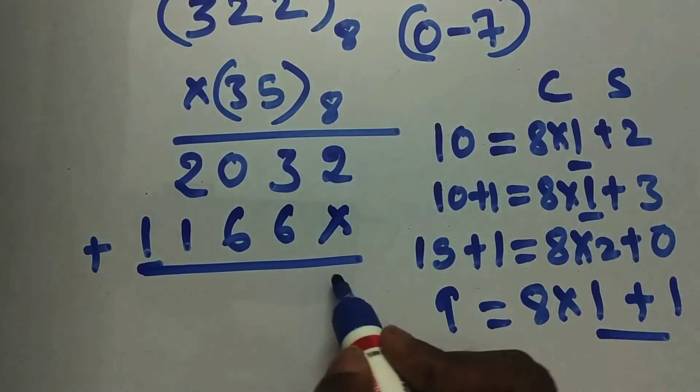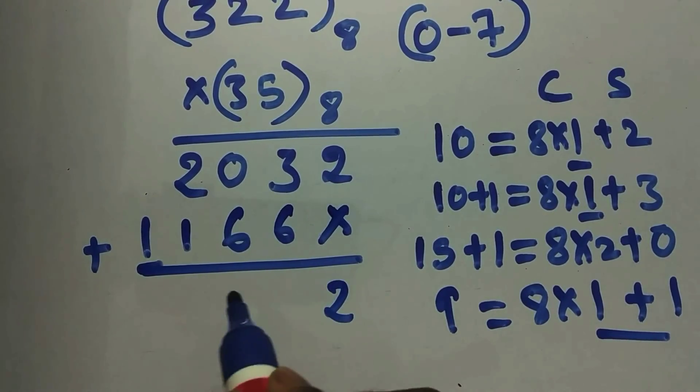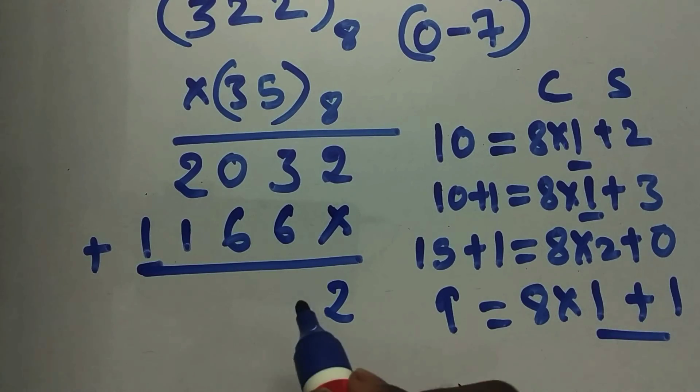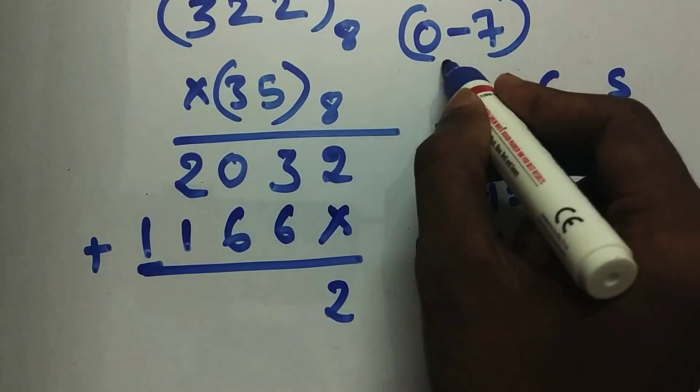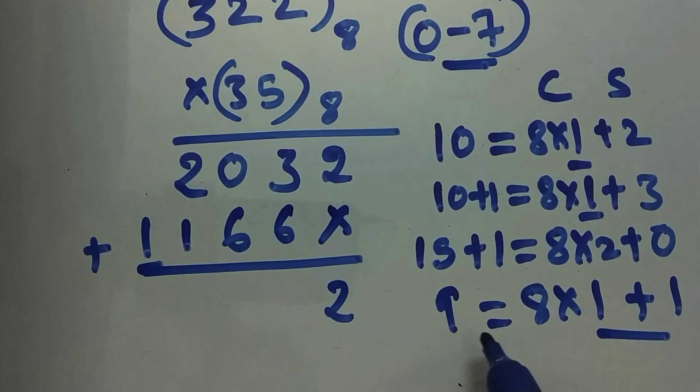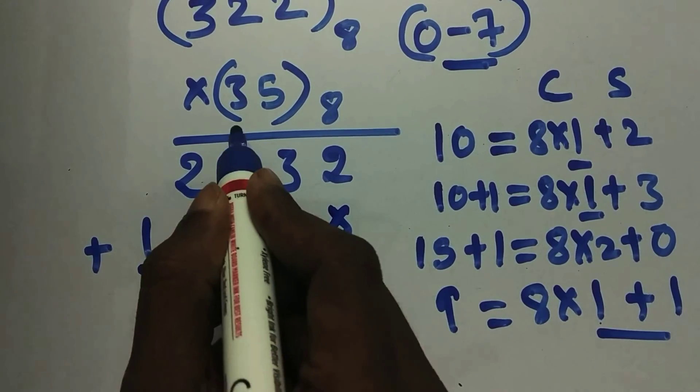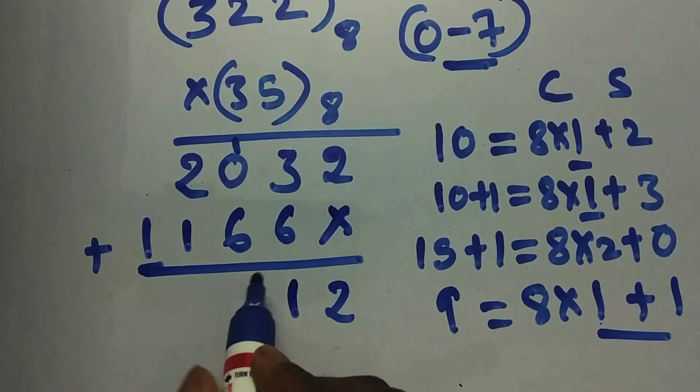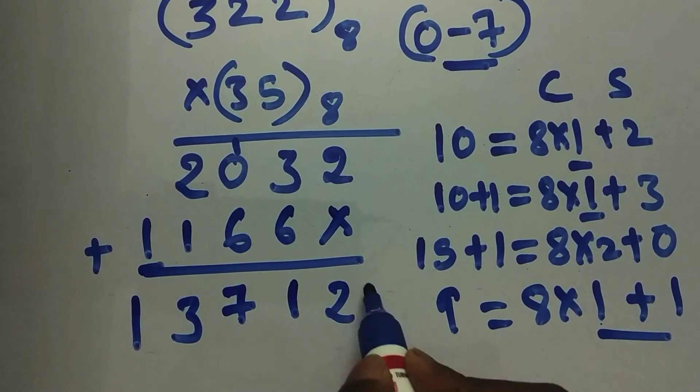You need to add it. It's 2 plus 0, it's 2. 6 plus 3, it's not 9. Don't write 9 here, your answer will be wrong. I want you to write in octal form. So 9 is not in 0 to 7, so convert it into octal. It's 1 and 1. So 1 over here, 1 is carried over here. So 6 plus 1, it's 7. So 2 plus 1, it's 3, and 1. 13712 is your answer.